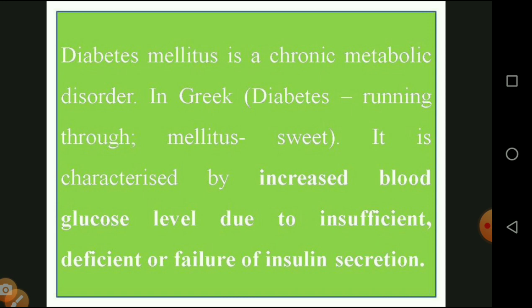Diabetes mellitus is characterized by an increase in blood glucose level due to insufficient, defective, or failed insulin secretion. Insulin is a hormone secreted by the beta cells of the islets of Langerhans in the pancreas, which controls blood glucose level. When insulin secretion is insufficient or the body is unable to produce insulin, diabetes mellitus affects the body.